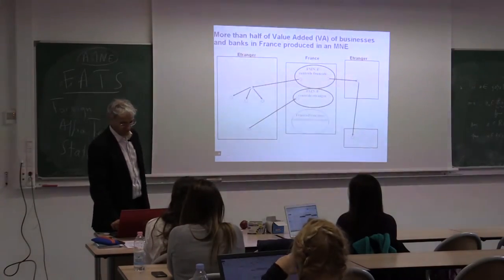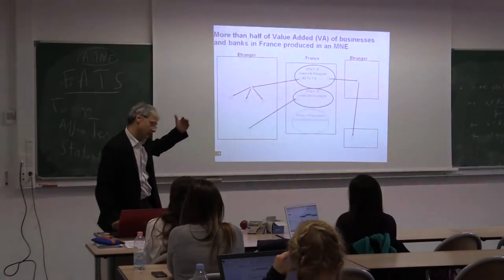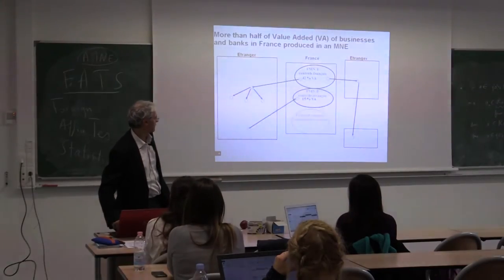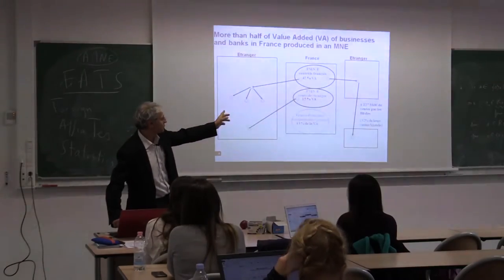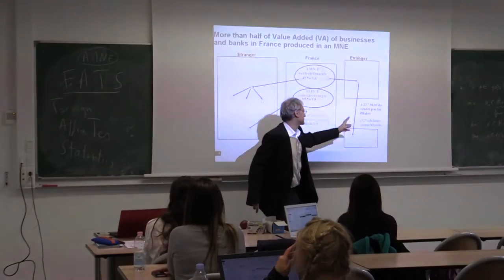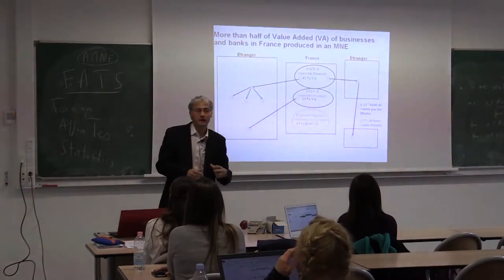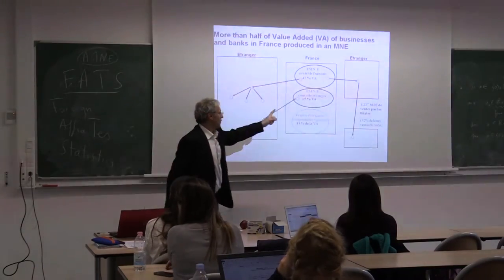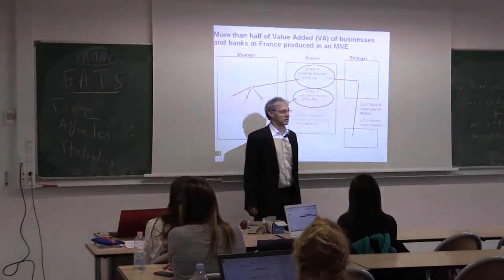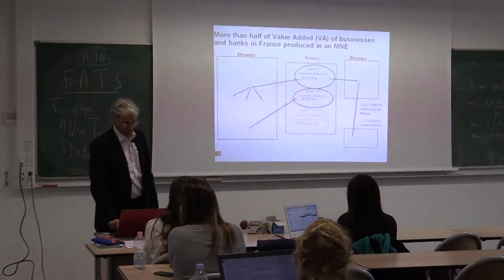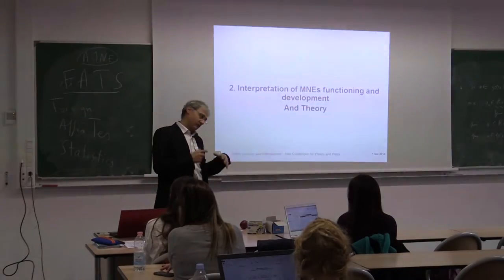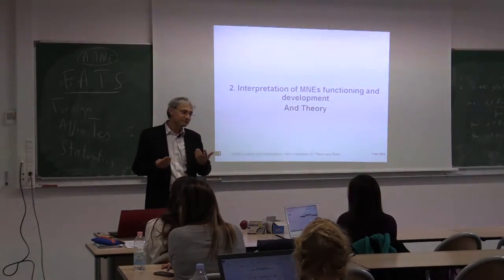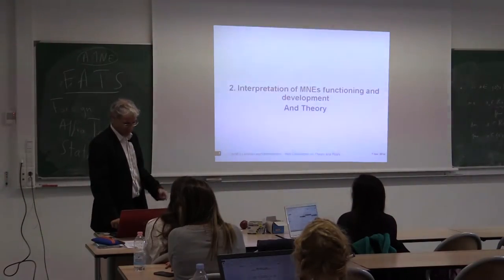For value-added, it's more or less the same: 57% of value-added of banks and enterprises. And sales outside France, directly by affiliates established abroad, amount to 1,200 billion euros — about half of their global sales. That is to fix the idea: multinationals count a lot, so we need to say something specific about them.